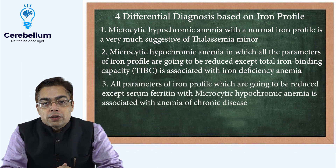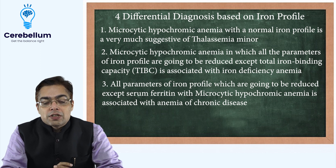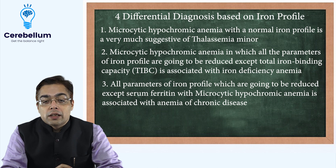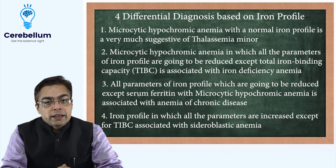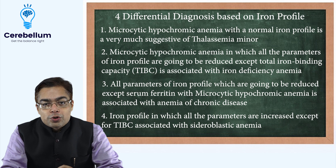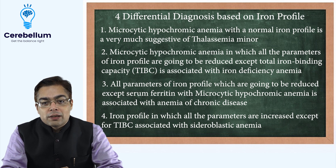All parameters of the iron profile which are going to be reduced except serum ferritin with microcytic hypochromic anemia is associated with anemia of chronic disease. And when we are talking about an iron profile in which all the parameters are increased except for TIBC, that is associated with sideroblastic anemia. Hope this helps you in the exam. Best wishes.